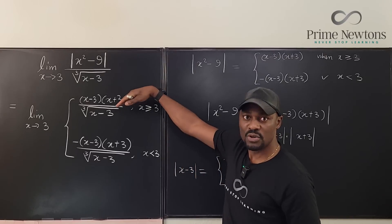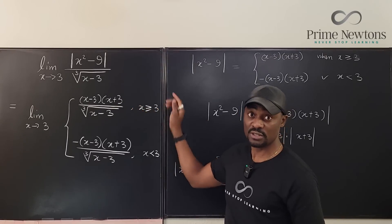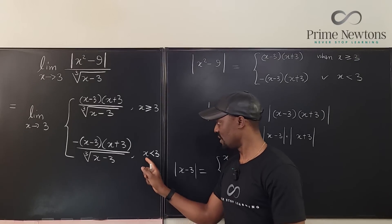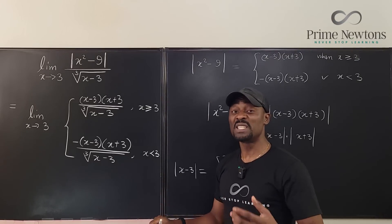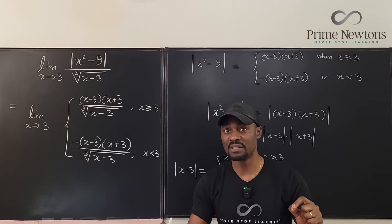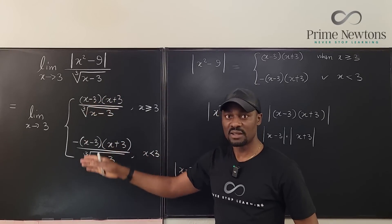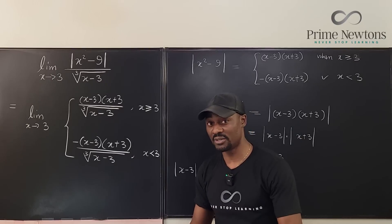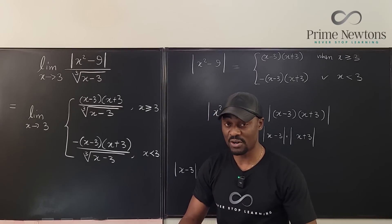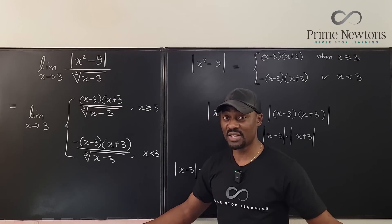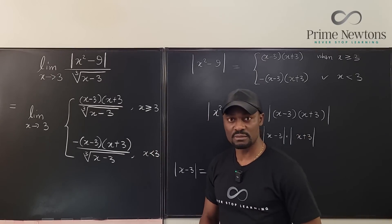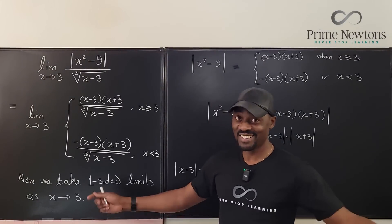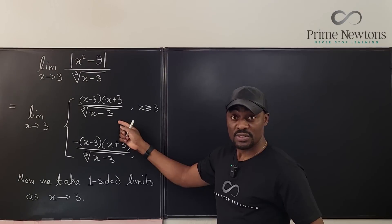The point of contention is at 3 — we're approaching 3 from the right (greater than 3) and also from the left (less than 3). We'll take two one-sided limits: limit from the right and limit from the left. If the two are the same, the limit exists and that's your answer. If they're not the same, the limit does not exist.